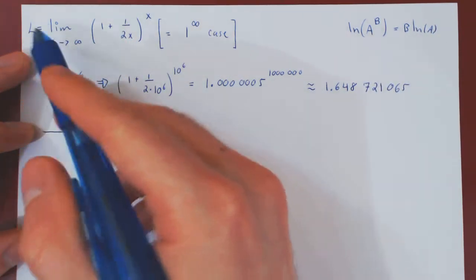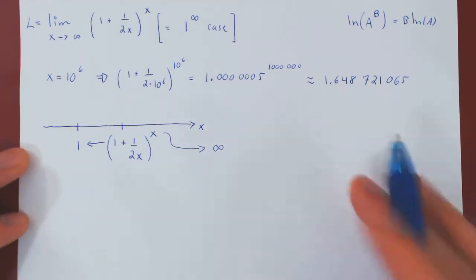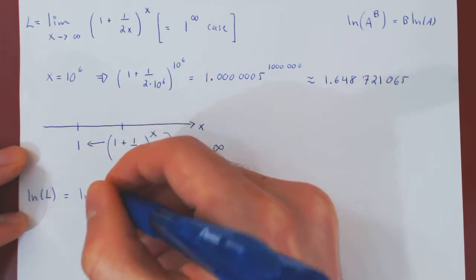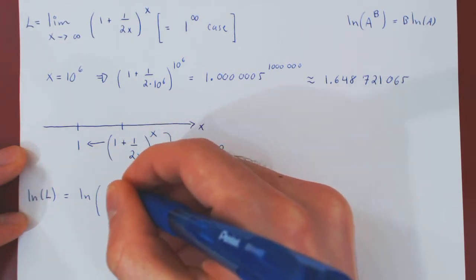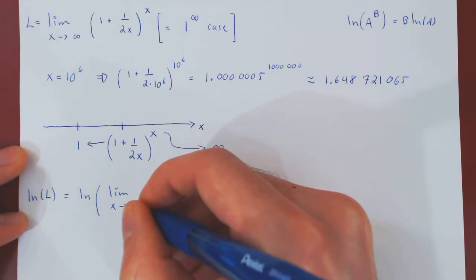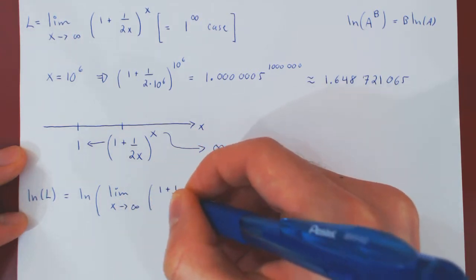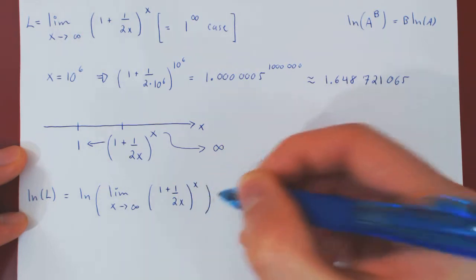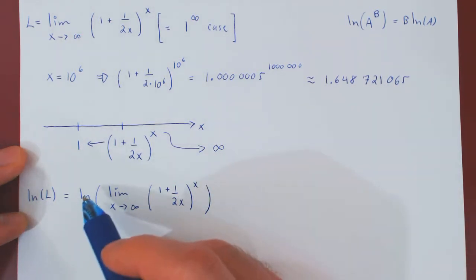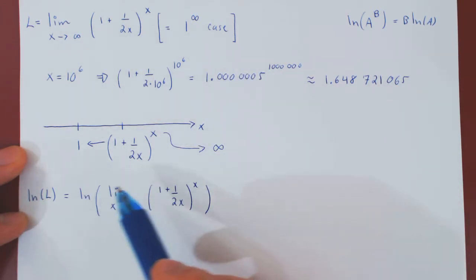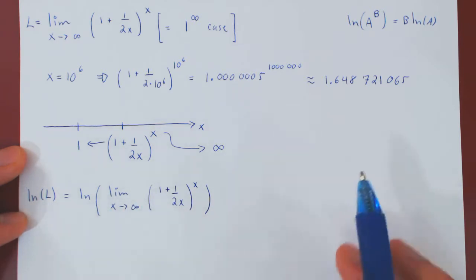So let us now take the ln of the limit. So ln of L is the ln of the limit. And now we can use the fact that ln is a continuous function for positive values and interchange the limit and the ln. So the ln of the limit, by continuity of ln on the positive real axis, is the limit of the ln.